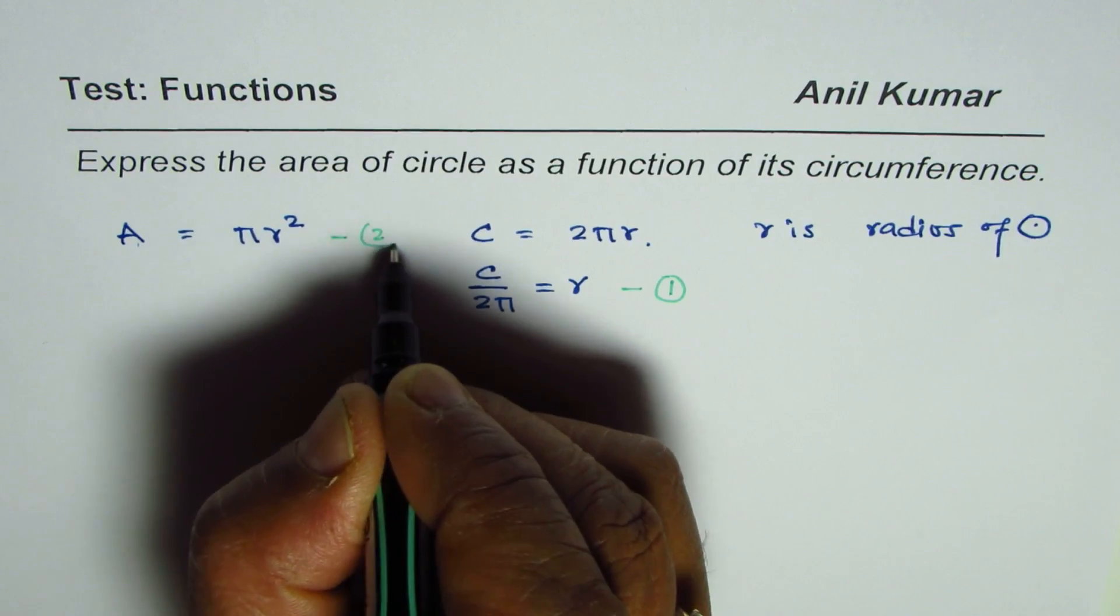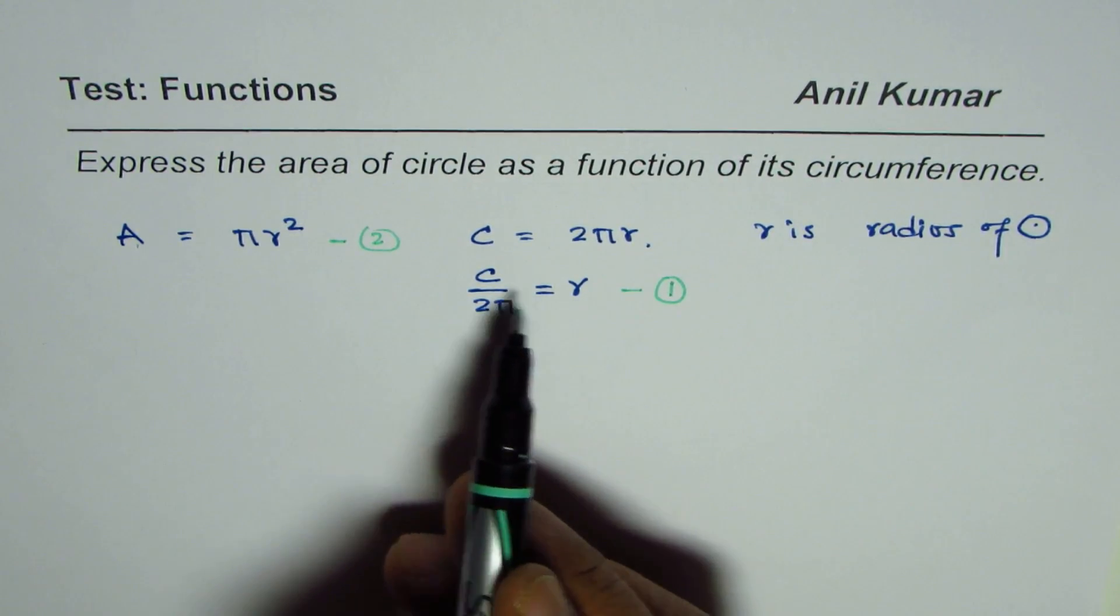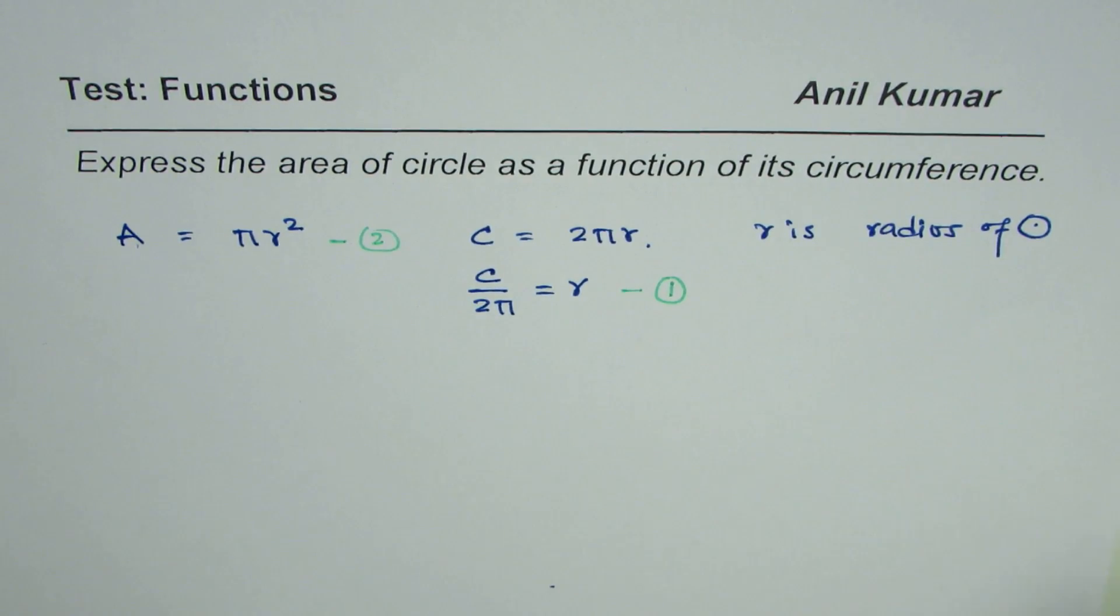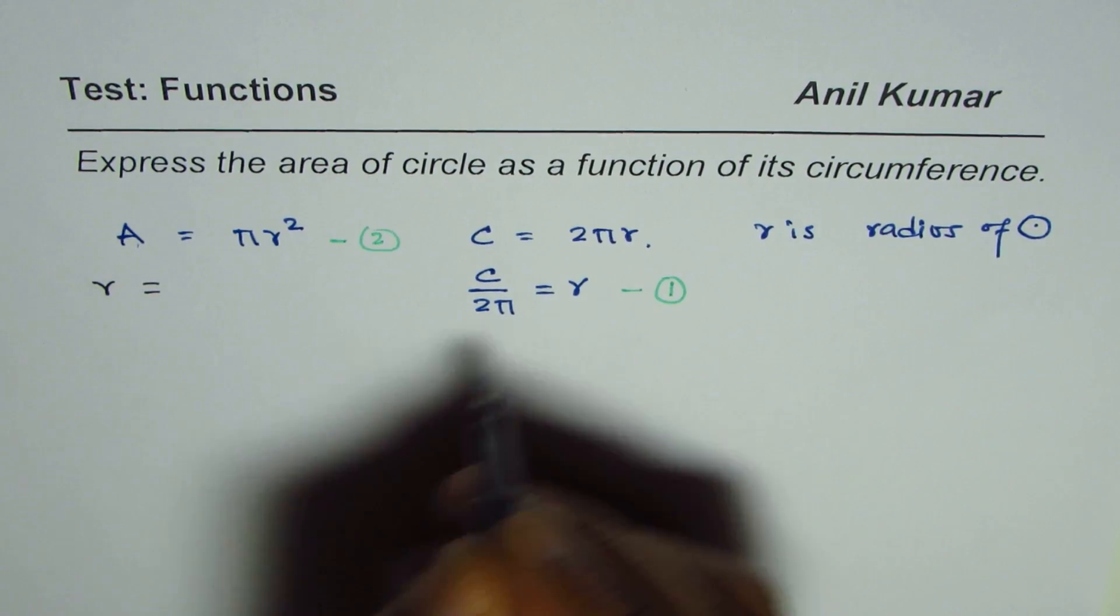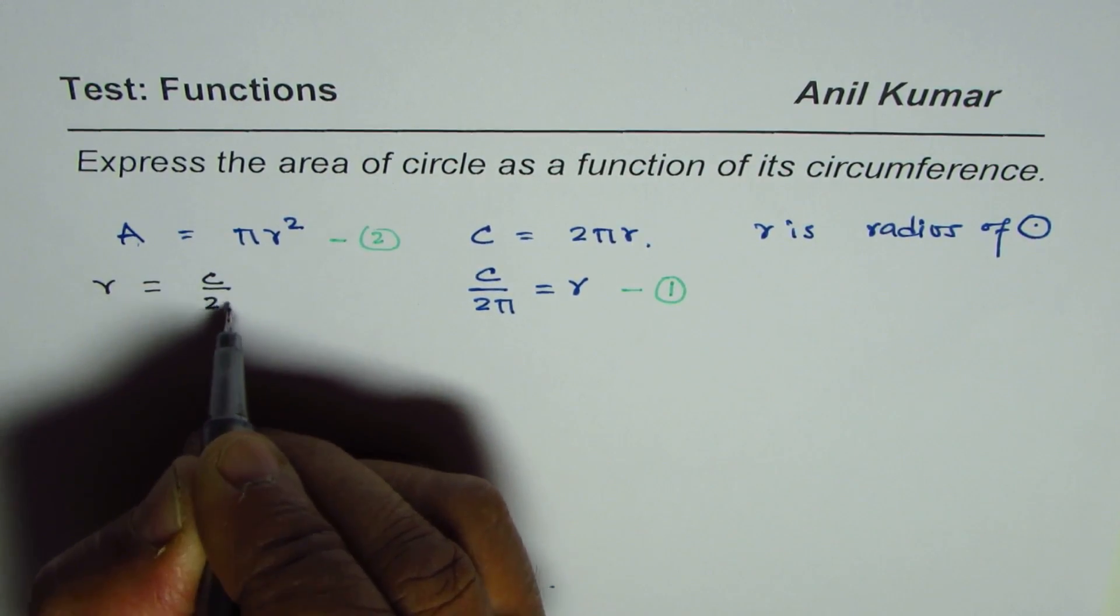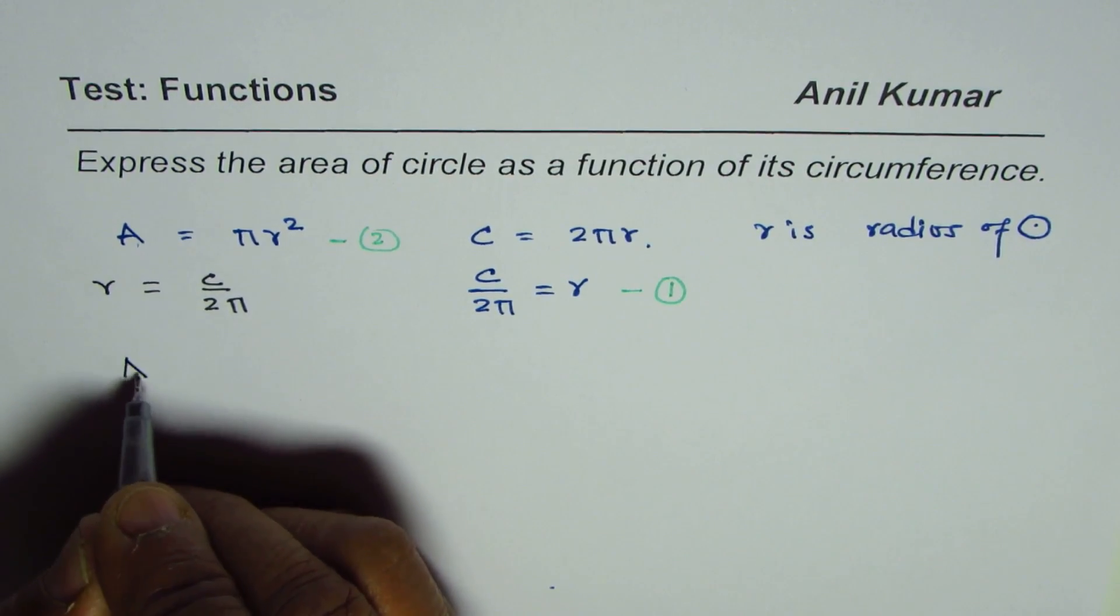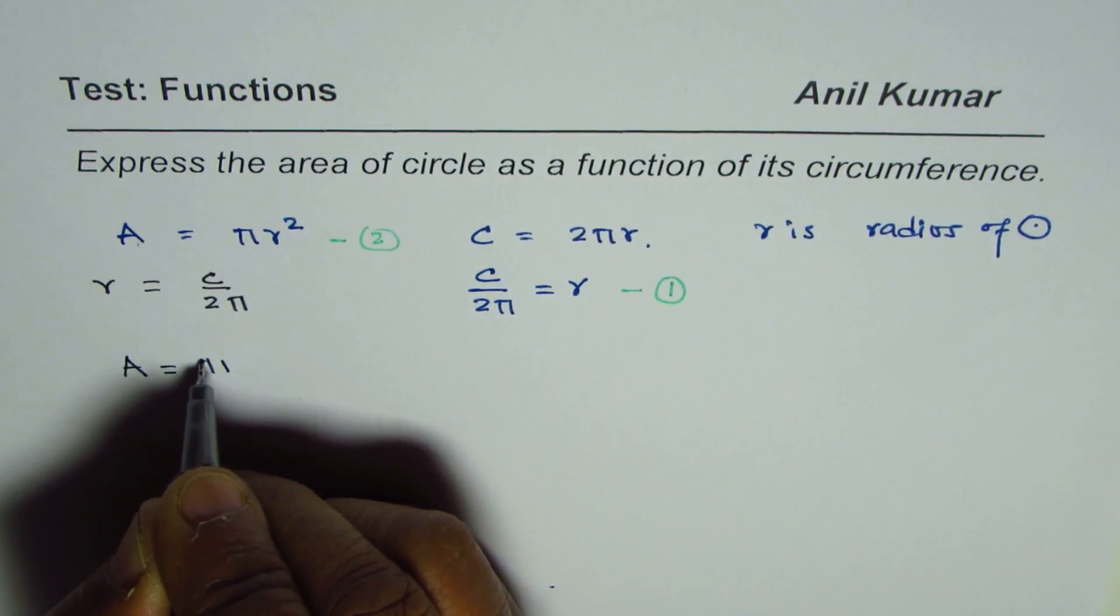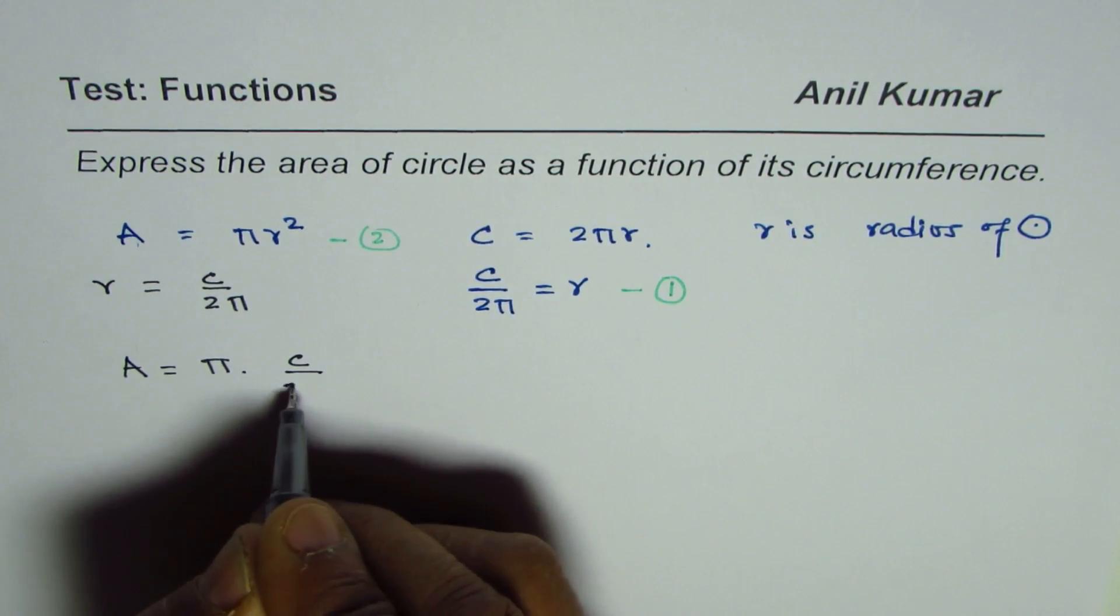in the original equation for area. So we'll write r equals C over 2π in the area formula. We are replacing r with C over 2π in this equation for area, so we can write area A as π, and instead of r², we write (C over 2π)².